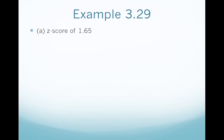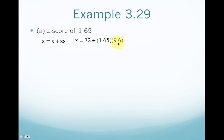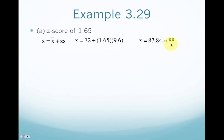For a z-score of 1.65, the formula is x equals x-bar plus z times s. We plug in: x-bar is 72, z is 1.65, and the sample standard deviation s is 9.6. Since it's a positive z-score, you would expect the student's raw score to be above the mean — greater than 72. Plugging that into the calculator, you get 87.84, approximately 88 rounded to the nearest whole number. So a student with a z-score of 1.65 has a test score of approximately 88.